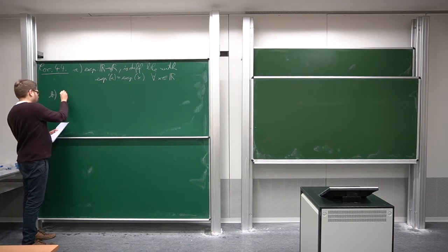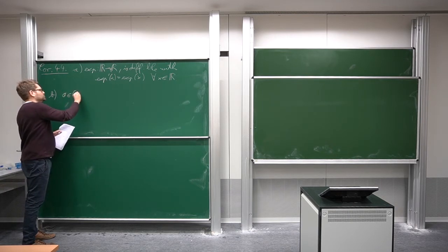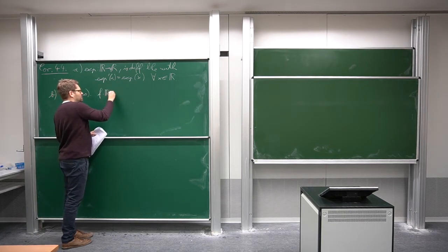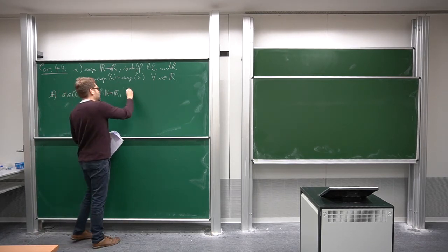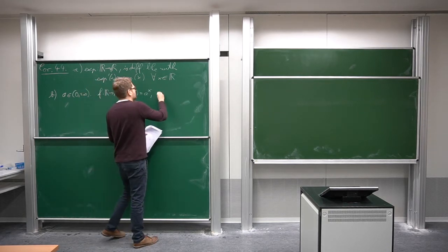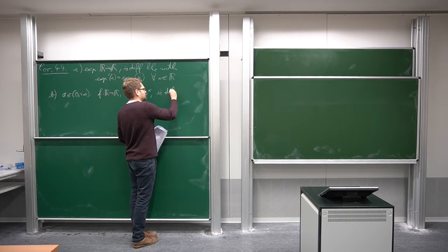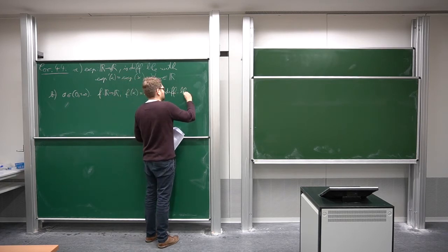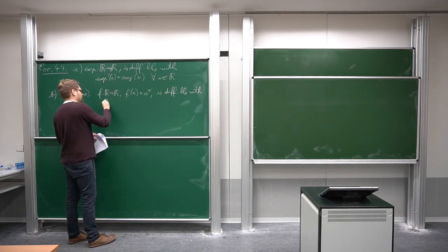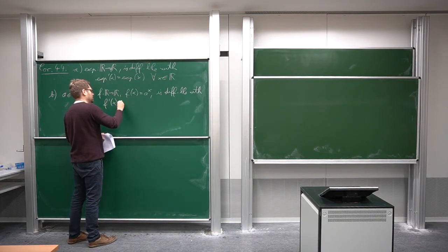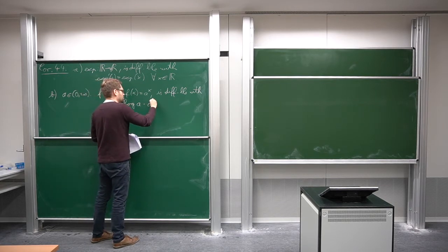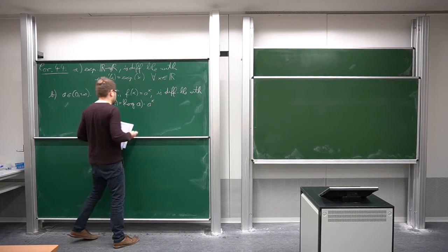Part b: if we consider exponential functions with arbitrary basis, so we have some a in (0, +∞) and we consider the function from R to R, f of x is a to the power of x. This is differentiable and we can directly write down its derivative: f prime of x is log(a) times a to the power of x. So this is a constant factor here.